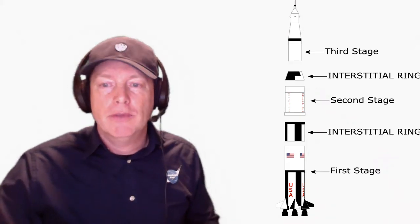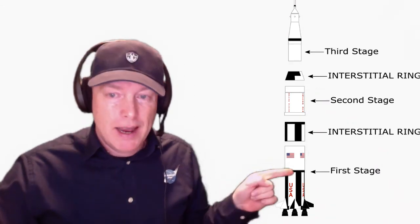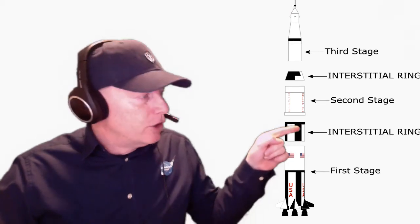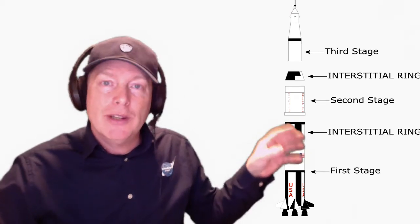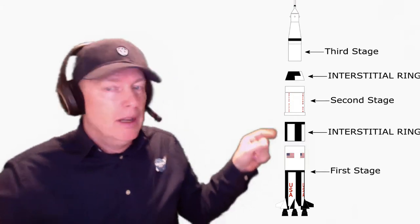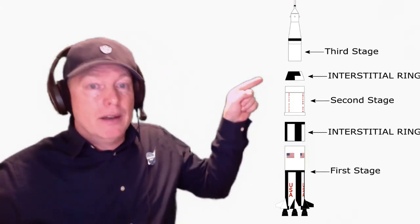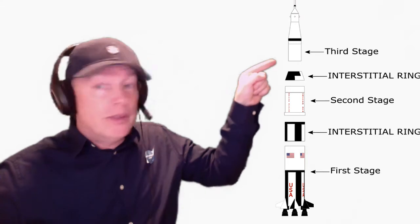Okay, here you see you've got the first stage, an interstitial ring, which is just a fancy word for the ring in between which connects the two stages. Then you've got the second stage and another interstitial ring and the third stage.